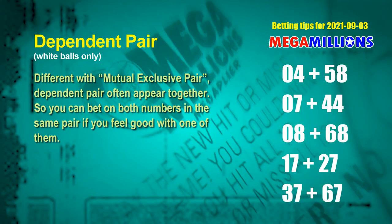Some numbers are dependent — in the same dependent pair, you can bet on both because they often appear together in winning numbers of a draw. The white ball dependent pairs for the next draw are: 04 & 58, 07 & 44, 08 & 68, 17 & 27, and 37 & 67.